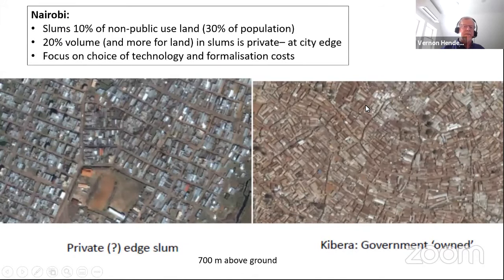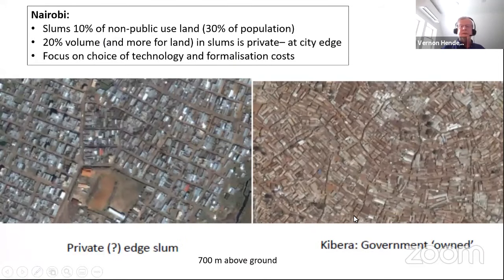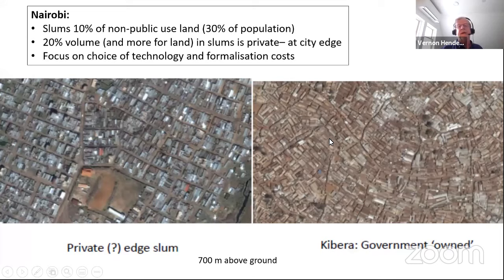This is Kibera, shot from about 700 meters above ground. There's no real pattern to the laneways or roads — it's all a jumble.